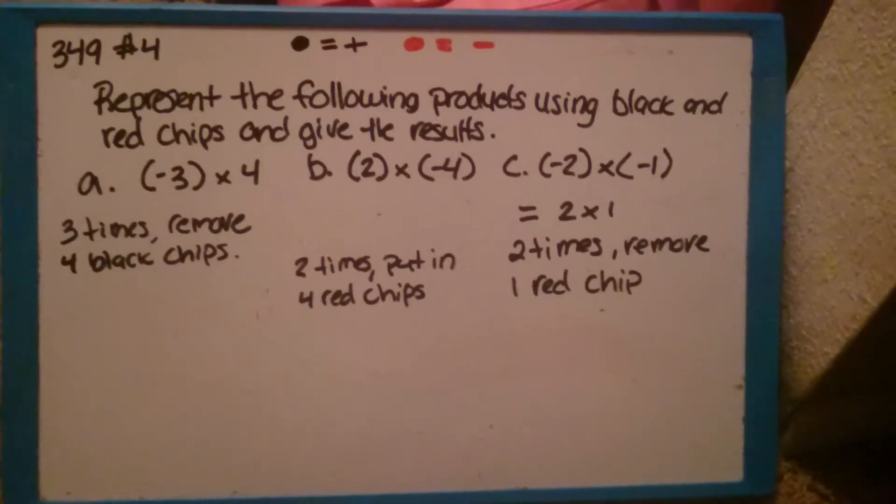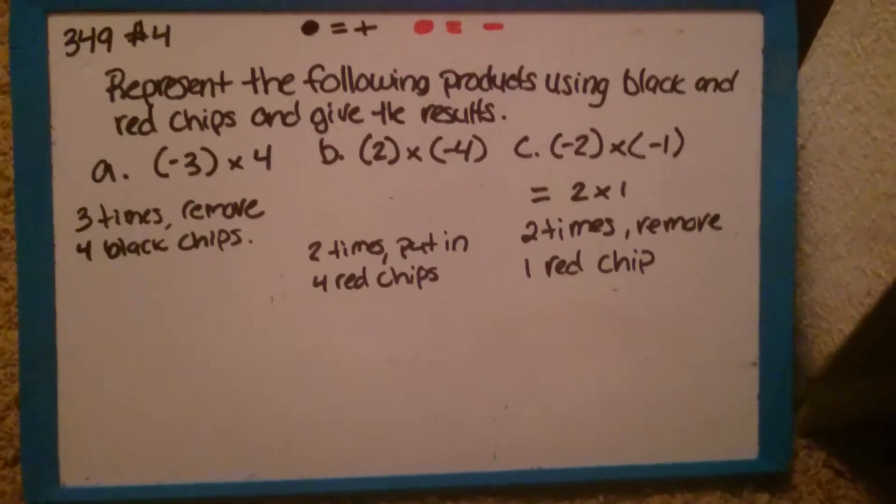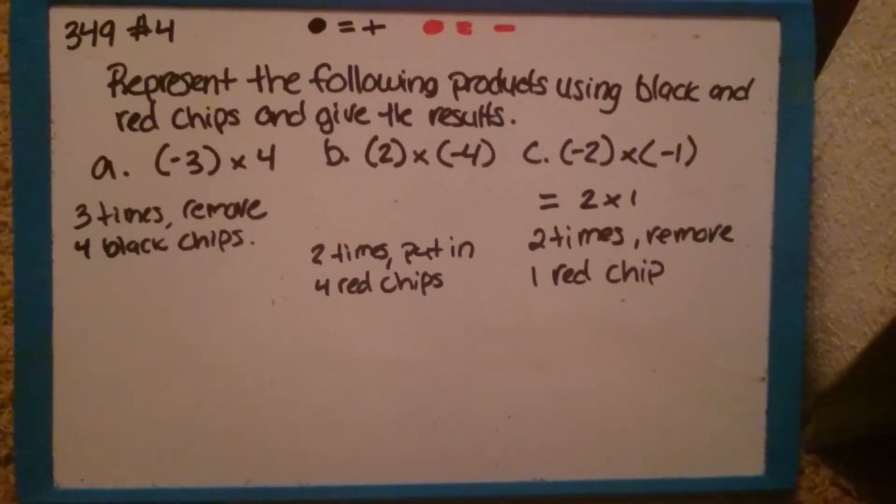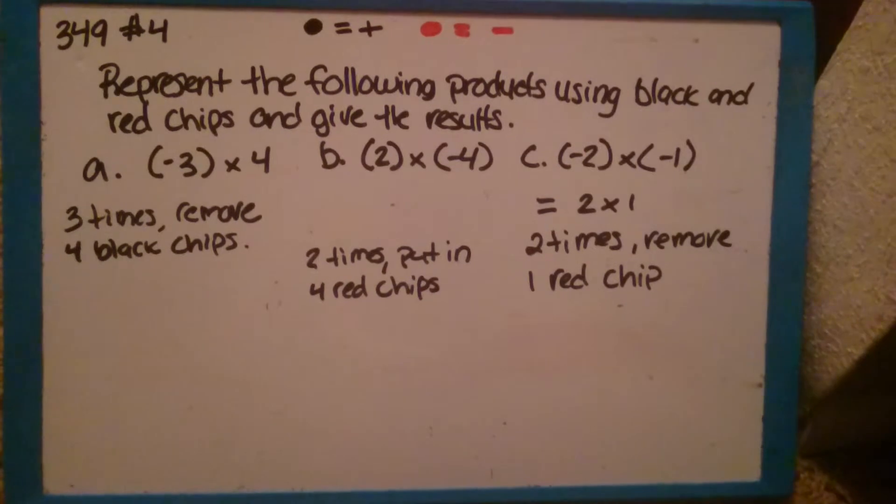Part A is negative 3 times 4, Part B is 2 times negative 4, and Part C is negative 2 times negative 1. In order to do these problems, we probably have to understand what they're asking for.